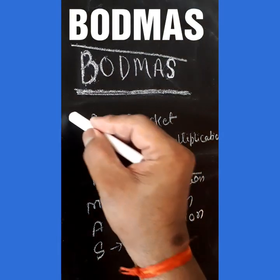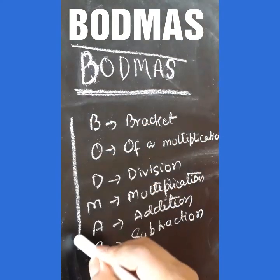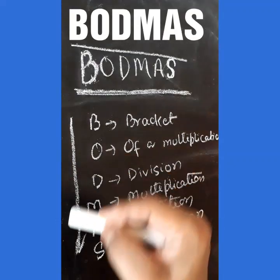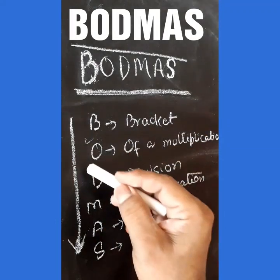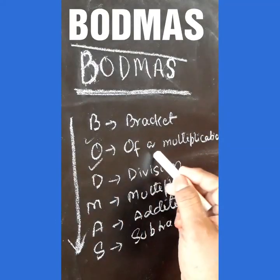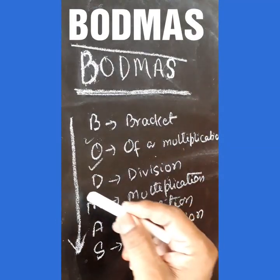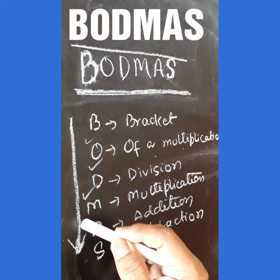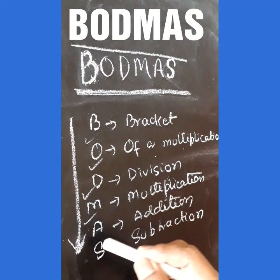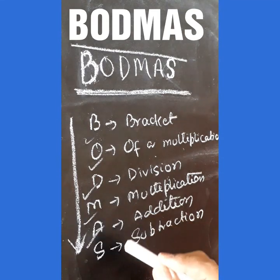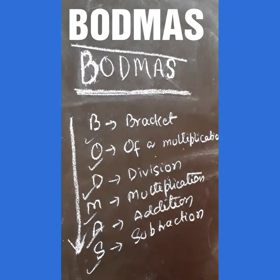We follow the order like this: first we solve brackets, then Off or multiplication, then division, after that multiplication, then addition, and finally subtraction.